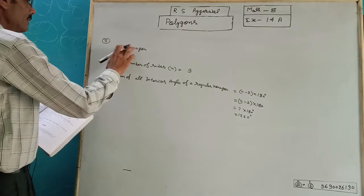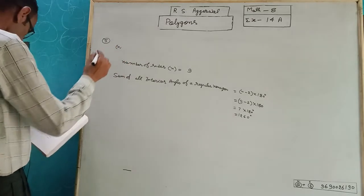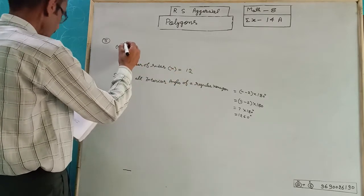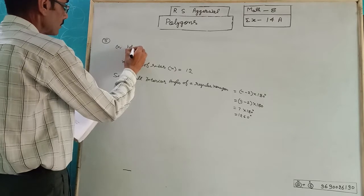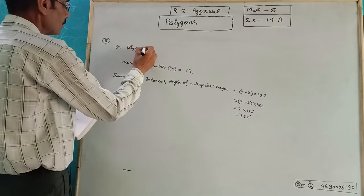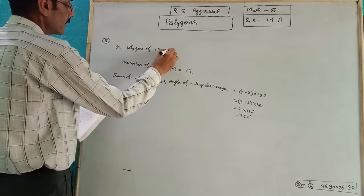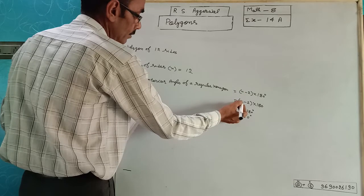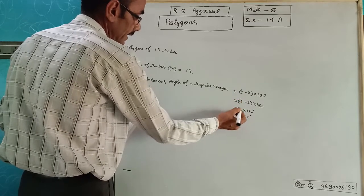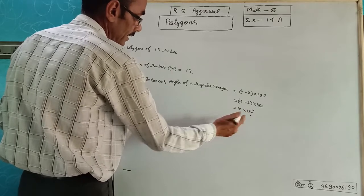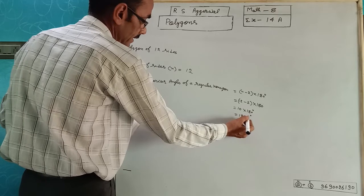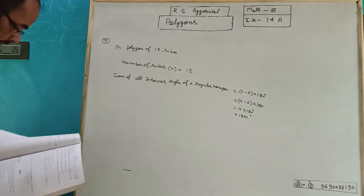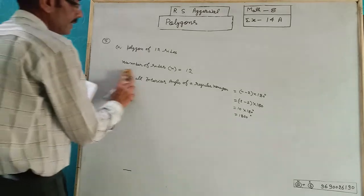Fourth part is a polygon with N equal to 12 sides. N value is 12, so 12 minus 2 is 10, and 10 multiplied by 180 equals 1800 degrees. Question 5 is complete.